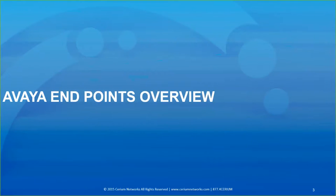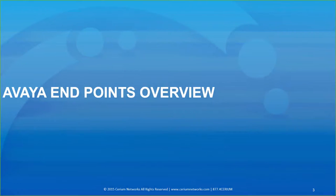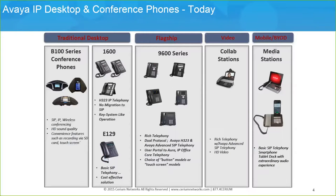Let's start with a high-level overview of the desk telephones in the portfolio and the protocols they support. Starting on the left, we have the B100 series of conference phones that are available as SIP, H.323, or analog endpoints. The 1600 series telephones support H.323 only. The E129 is a single-line SIP telephone. The 9600 series telephones can be flashed with either H.323 or SIP. The H175 video telephone, as well as the E159 and E169 media stations, support only SIP.